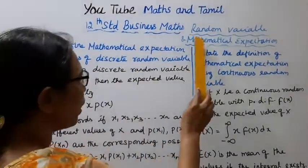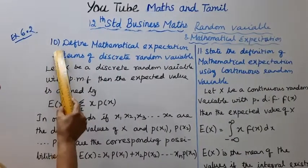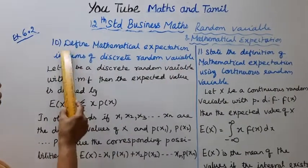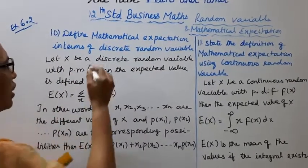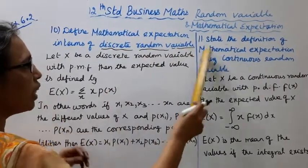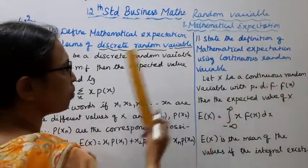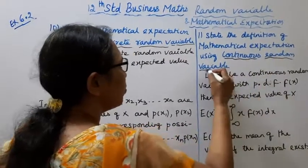12th Standard Business Maths, Random Variable and Mathematical Expectation, Exercise 6.2. Problem 10: Define Mathematical Expectation in terms of discrete random variable. Problem 11: State the definition of mathematical expectation using Continuous Random Variable.